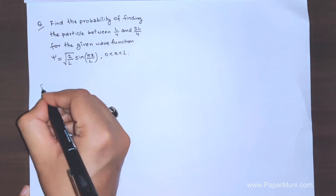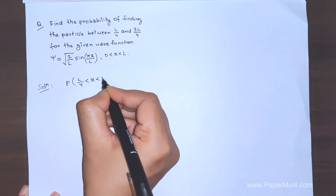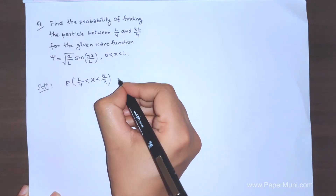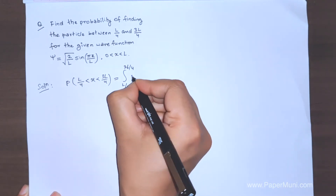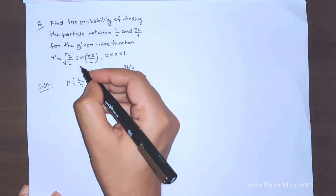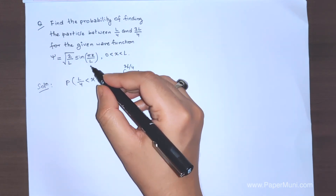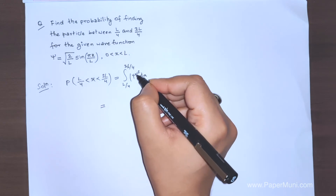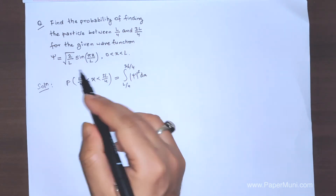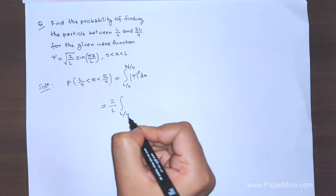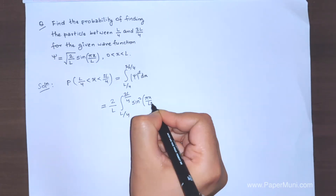The solution goes like this: we need to calculate this quantity — the integral from L/4 to 3L/4. This is the lower limit x₁ = L/4 and the upper limit x₂ = 3L/4. This is given by the integral of |ψ|² dx. Always be careful — take the mod squared properly; for a real function we can just square it. So we write ψ² and square the function. The coefficient becomes 2/L, so we have the integral from L/4 to 3L/4 of (2/L)·sin²(πx/L) dx.